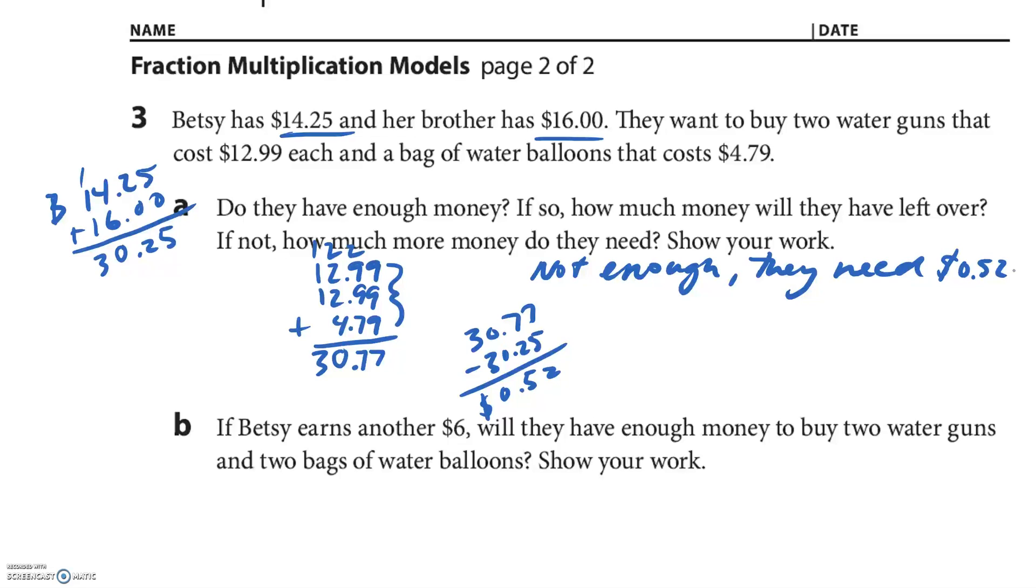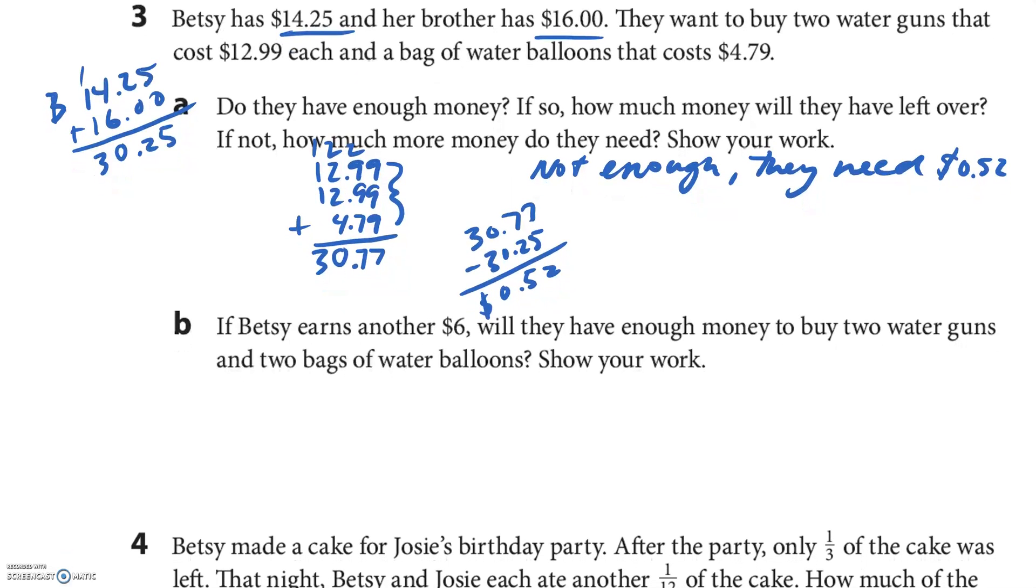If Betsy earns another $6, will they have enough money to buy two water guns and two bags of water balloons? Well, we got all kinds of things we can do, right? Let's just take our numbers from above. She's gonna earn $6 more, so $30.25 plus $6 is $36.25—this is what they have. Okay, then the original cost was $30.77, and then you're gonna buy another bag of water balloons, so $4.79. So now we add—6, here the 1, 15, bring the decimal down, 1, 5, 35. Yes, they have enough money.